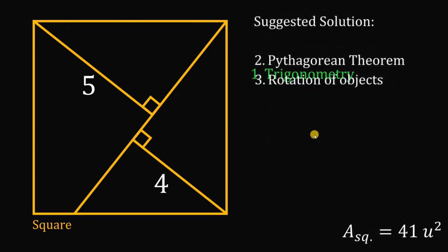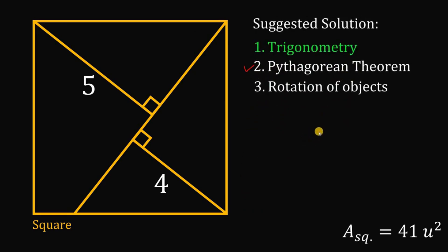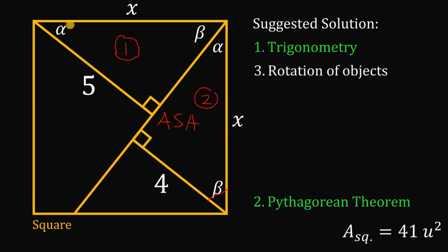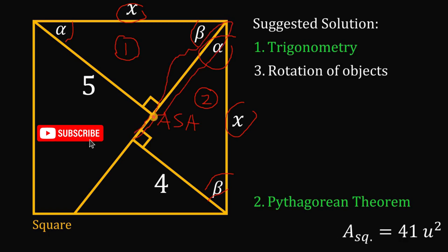Now, how about using the Pythagorean theorem? Let's call this angle alpha and this one beta. We know this is alpha, and this angle is also beta. Let x again be the side length of the square. Using the angle-side-angle postulate, these two right triangles must be congruent because we have alpha, x, and beta on each. Therefore, the longer leg of this right triangle must also be equal to 5 units.